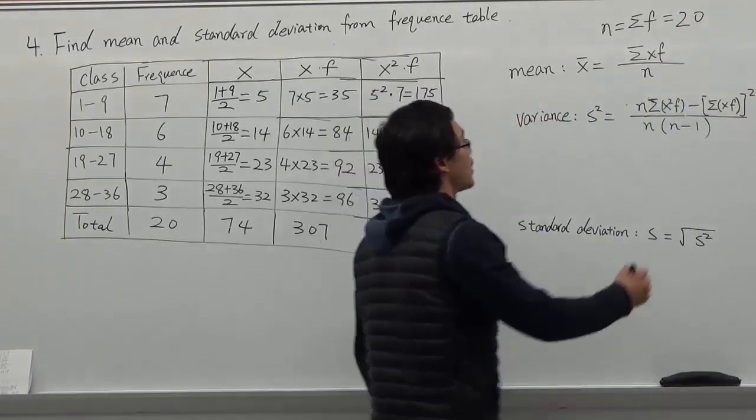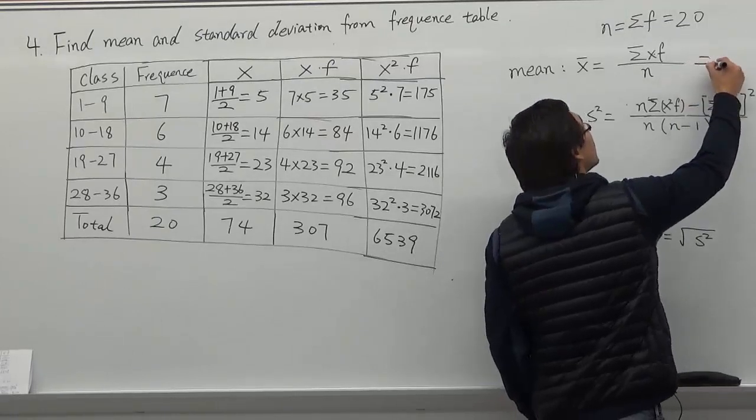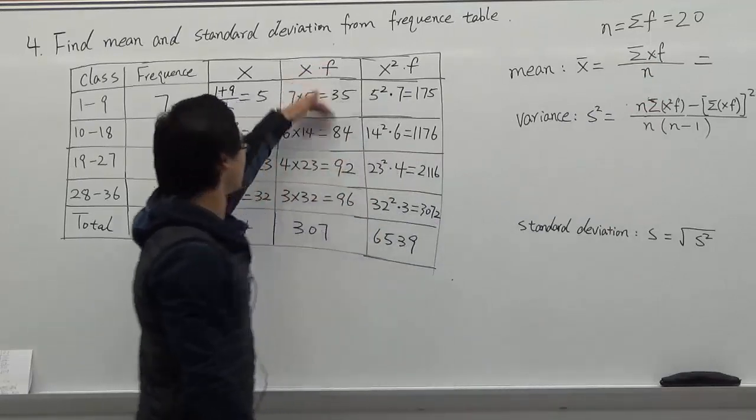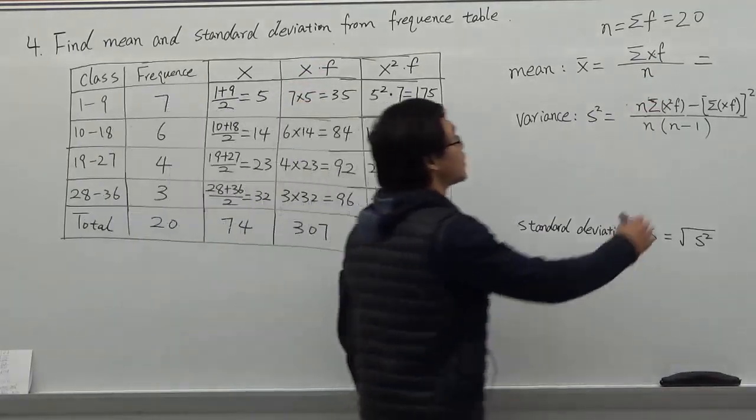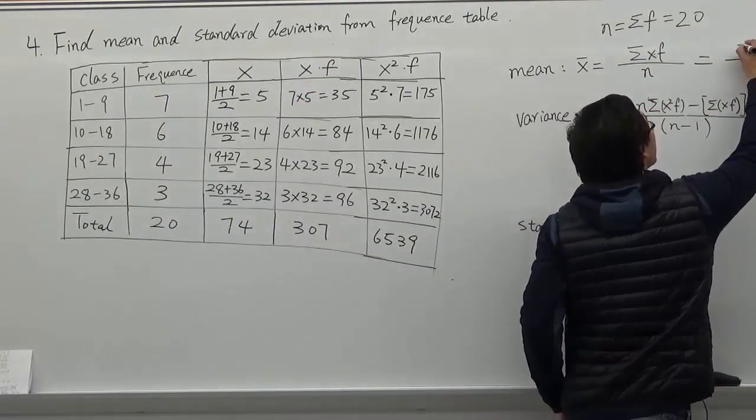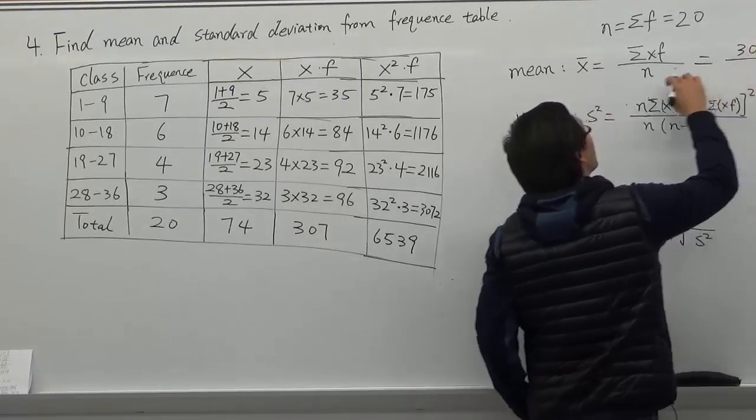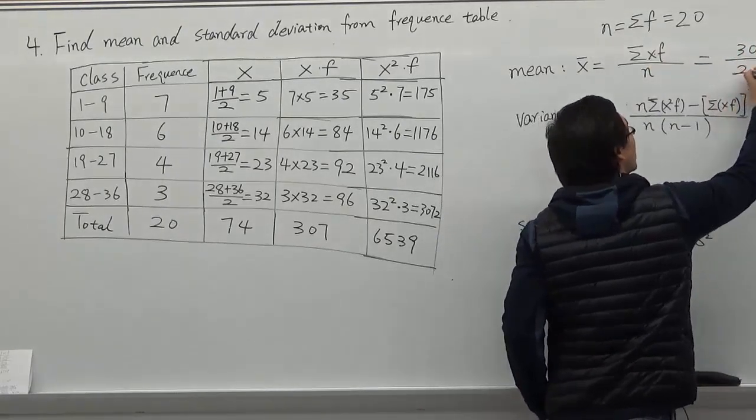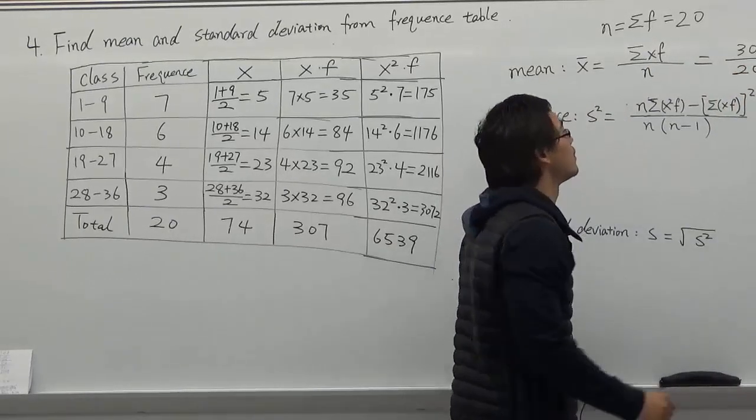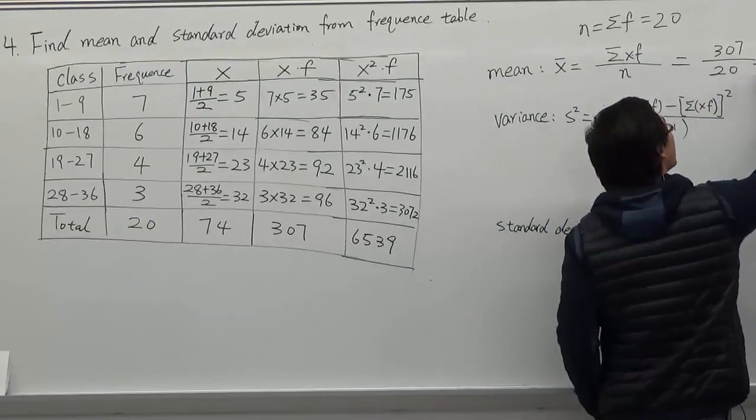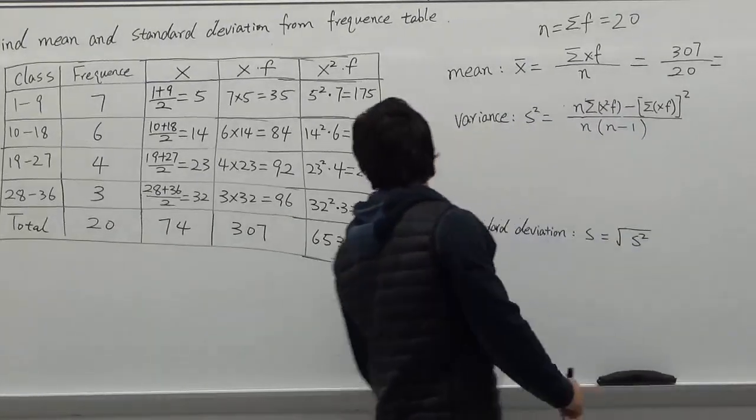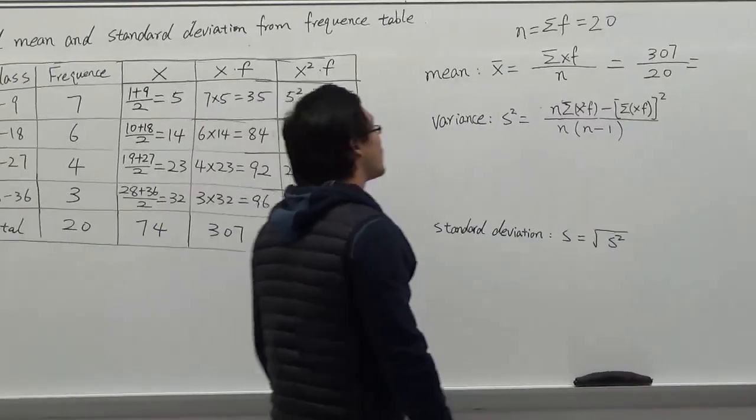And then we plug in. Summation of x times f is this column, equal to 307. Divide by the n, since the n equals summation of f, equal to 20. And then we find the mean is 15.